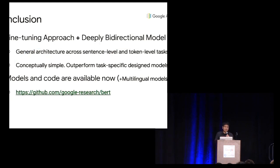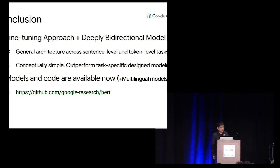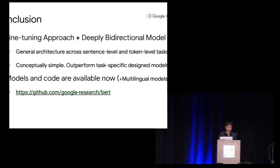BERT is a pre-training approach combined with deeply bi-directional models. Because we combine these two components, we can have a general architecture across classification, sequence tagging, and question-answering tasks. It's also conceptually simple because we don't have to do architecture search, and so far it outperforms task-specific designed models. The code and models are available, and we also have multilingual models. Thank you.